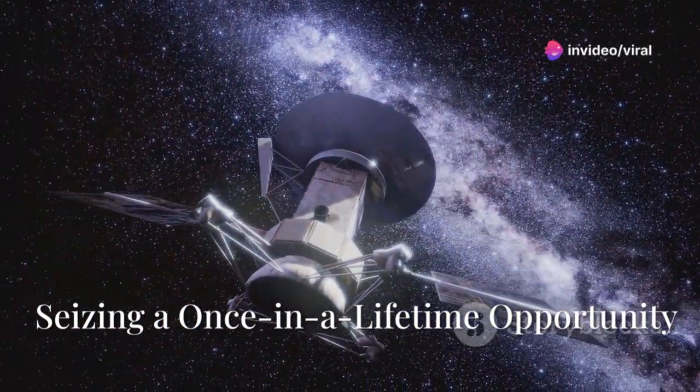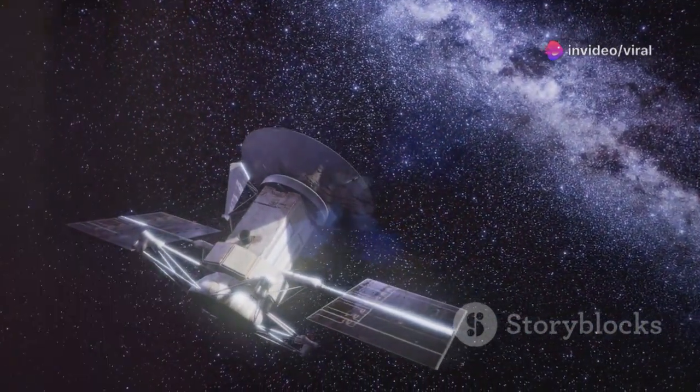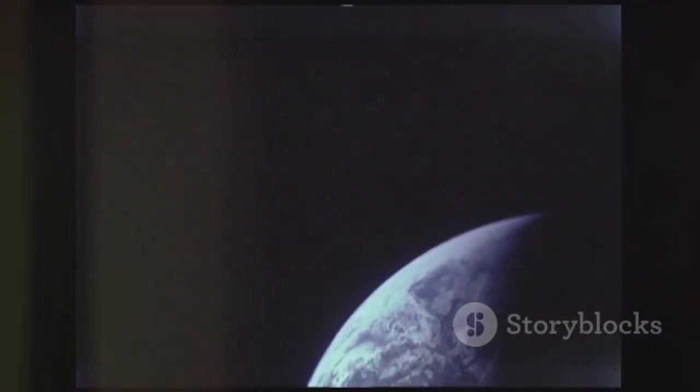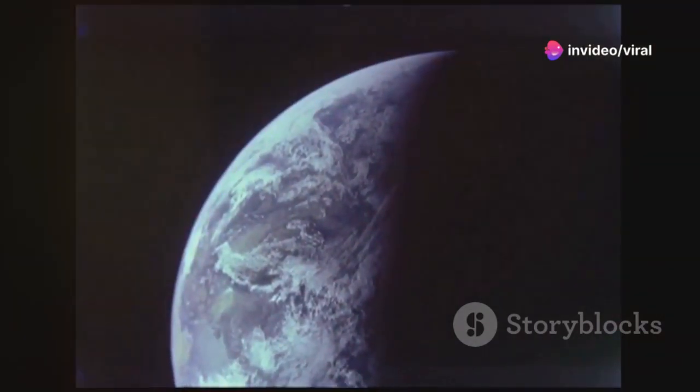Why did we send Voyager 1? What made this mission so urgent, so extraordinary that it captured the imagination of scientists and dreamers alike? In the late 1970s, a rare and remarkable alignment of the outer planets, Jupiter, Saturn, Uranus and Neptune, created a unique window of opportunity.